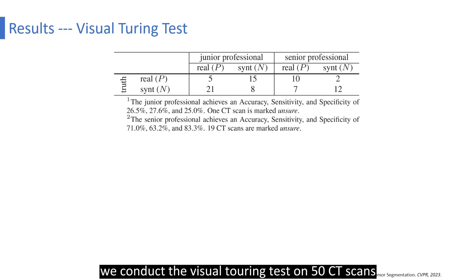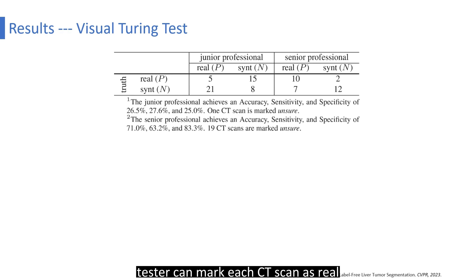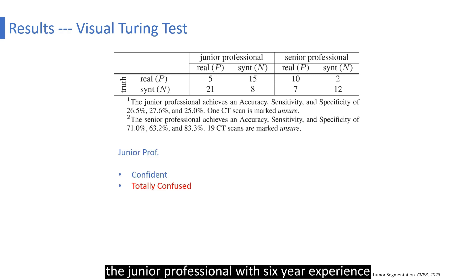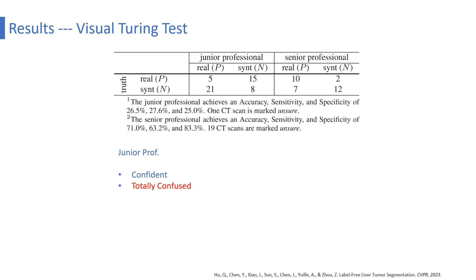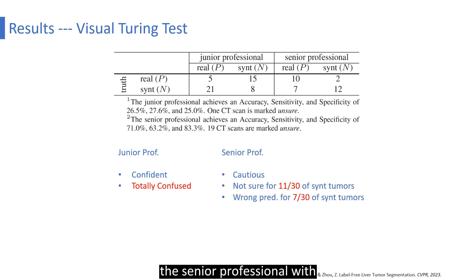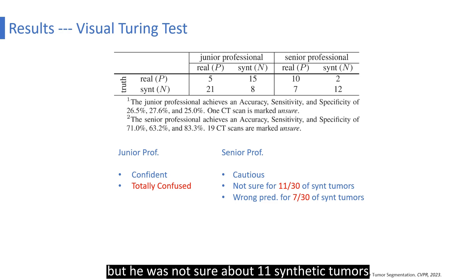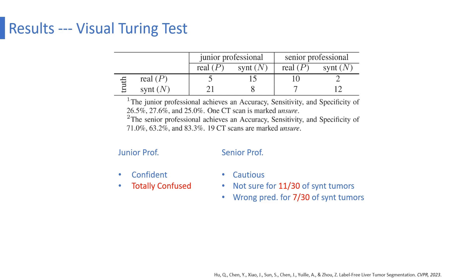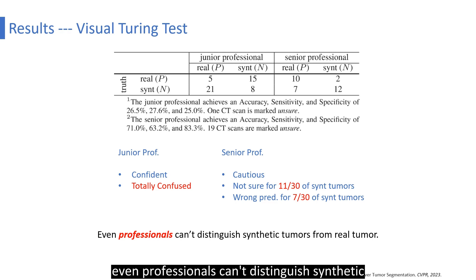We conducted the visual Turing test on 50 CT scans, where 20 scans are real tumors and the remaining 30 scans are synthetic tumors. Testers can mark each CT scan as real, synthetic, or unsure. The junior professional with six-year experience gave definite judgments on 49 out of 50 samples; however, all of their accuracy, sensitivity, and specificity are below 30%, meaning the generated samples succeeded in confusing the junior professional. The senior professional with 15-year experience achieved higher accuracy, but was not sure about 11 synthetic tumors and got the wrong prediction for 7 synthetic tumors — a total of 18 out of 30 generated tumors confused them. This result shows that even professionals can't distinguish synthetic tumors from real tumors.